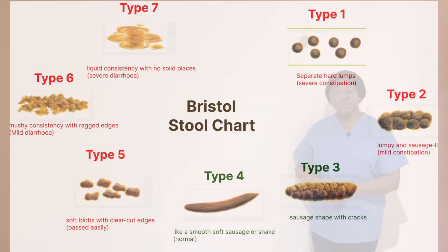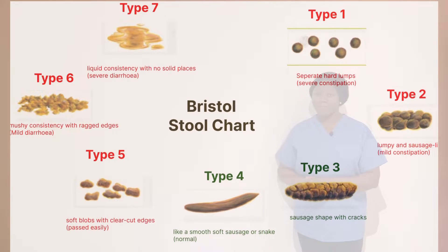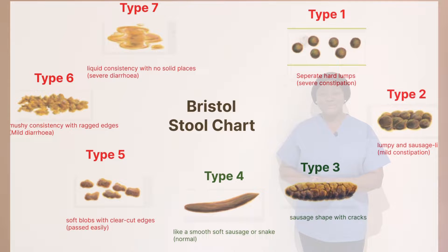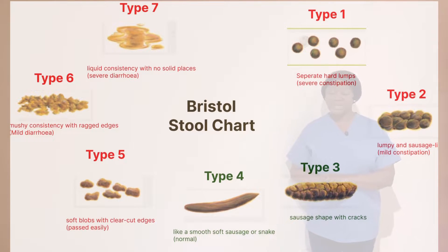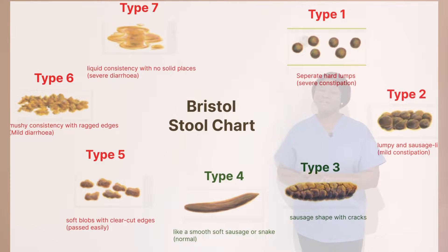Type one stool is hard and separate, and it is considered severe constipation. Type two is lumpy and sausage-like and is categorized as mild constipation. Type three is near normal — it's sausage-like with a cracked surface.